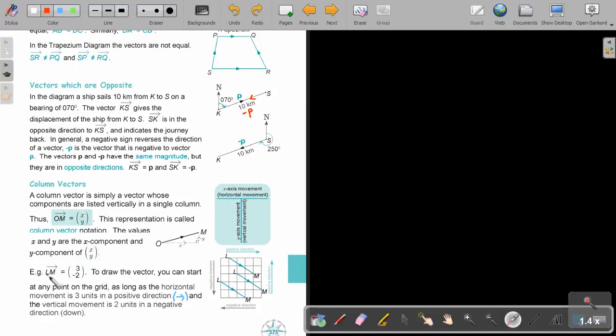So in this example, LM, so the horizontal movement is three, positive three. If there's no sign, it's positive. And the vertical movement is negative two. So to draw the vector, you can start at any point on the grid. As long as the horizontal movement is three units in a positive direction, and the vertical movement is two units in a negative direction. So you can just say, it's going to be one, two, three, and one, two down. So every time, if you look at this one, it's three to the right. One, two, three, two down. One, two, three, two down. So these vectors are all equal.